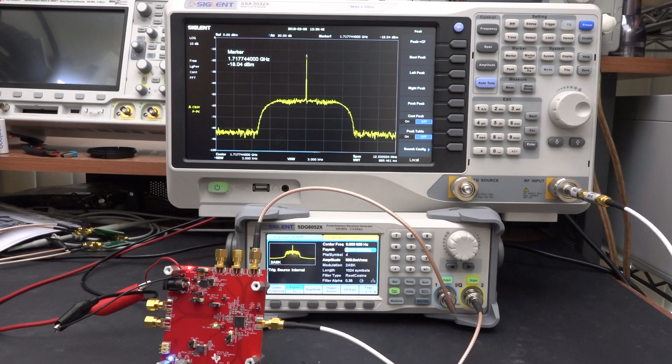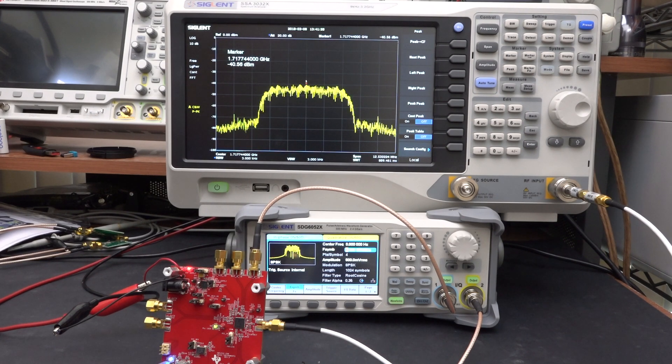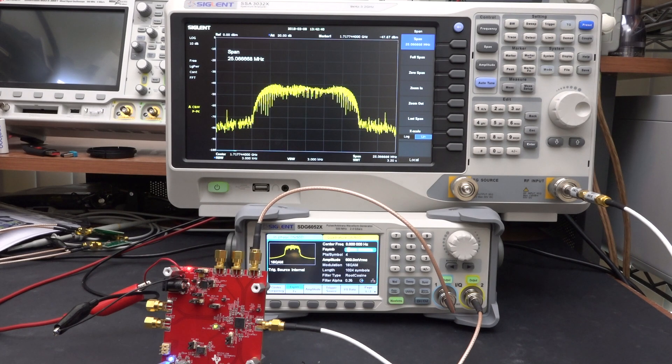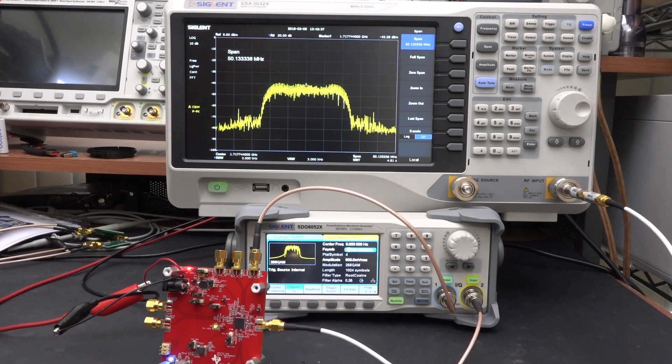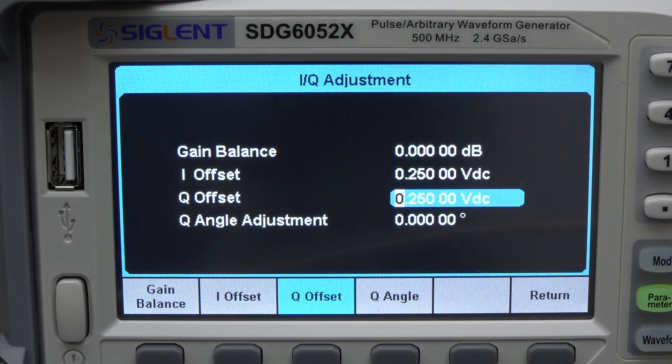Here's a shot of 2ASK at 5Mbps. Here's 8PSK. Here's 16QAM at 11Mbps, and the unit maxes out at 256QAM at 18.75Mbps. Finally I want to show you that adjusting the DC offset on the IQ outputs is possible, but only up to 0.25V. This may not be enough for some modulator ICs.